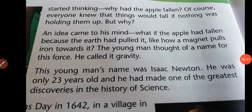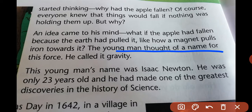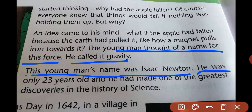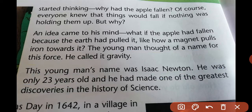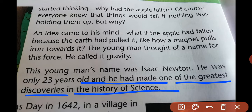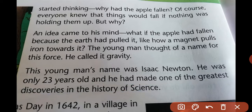The young man thought of a name for this force — the force by which the apple was attracted to fall on the earth, like a magnetic force. He called it gravity. This young man's name was Isaac Newton. He was only 23 years old and he had already made one of the greatest discoveries in the history of science — the force of gravity.